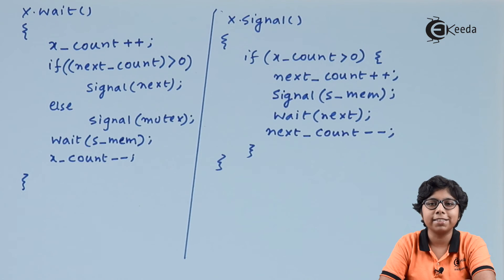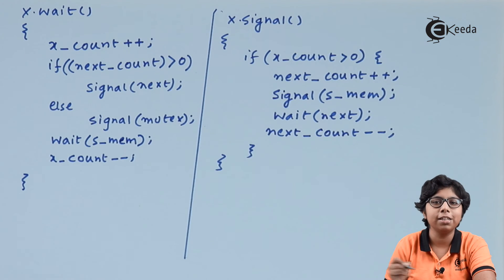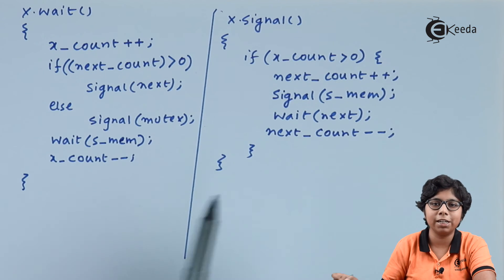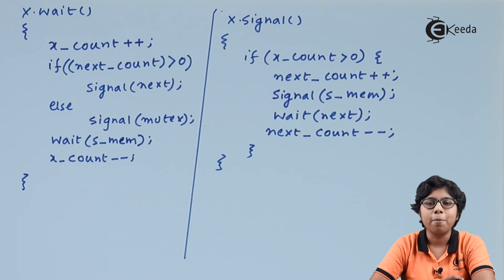The next process that has suspended itself on the next semaphore needs to wait using the wait(next) function. After it is released, we decrement next_count. In this way, a monitor can be implemented using the semaphore.